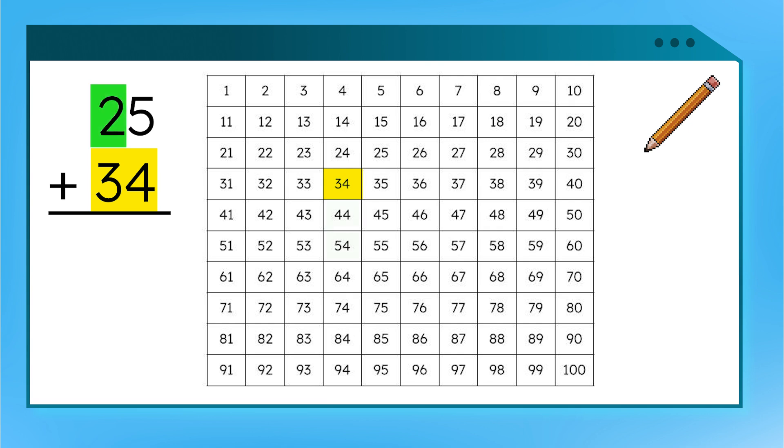Since we're adding, we move down two rows on our hundred chart. 10, 20. Now, are we done? Not yet! We still need to add our 1s. Should we keep moving down? Nope!